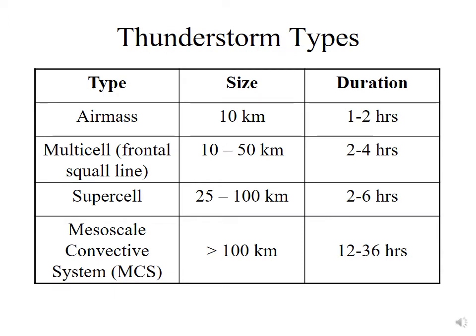The basic thunderstorm types can be divided up into four groups, starting from the smallest and moving to the largest. We have air mass thunderstorms, typically about 10 kilometers wide and a duration of one to two hours. We have multi-cell thunderstorms, sometimes called frontal squall lines, with a width of 10 to 50 kilometers and typically lasting two to four hours. We have supercell thunderstorms, which are about 25 to 100 kilometers and last two to six hours. And then we have mesoscale convective systems — an MCS is much larger, greater than 100 kilometers, and much more long-lived, lasting anywhere from 12 to 36 hours.